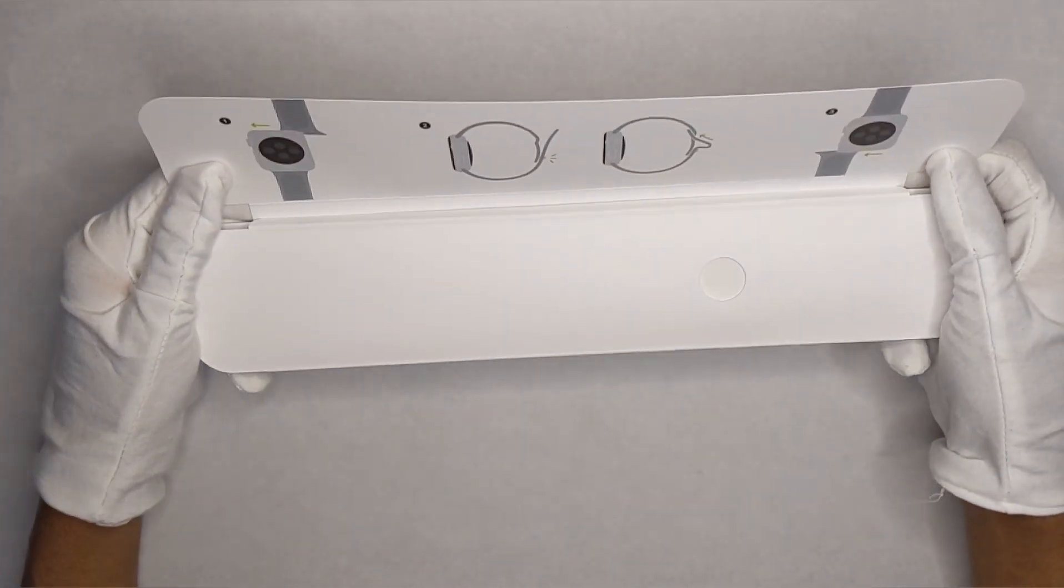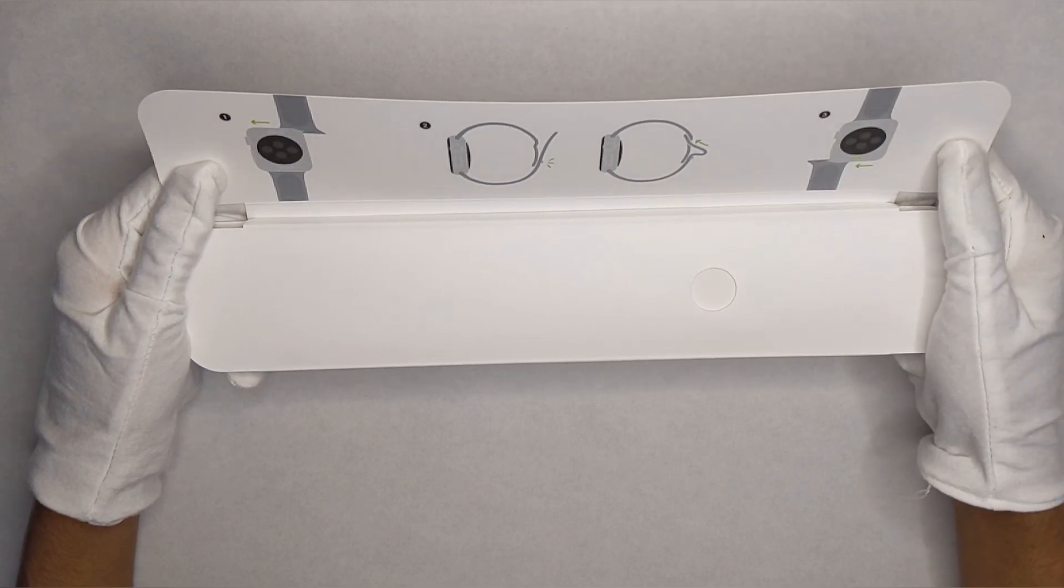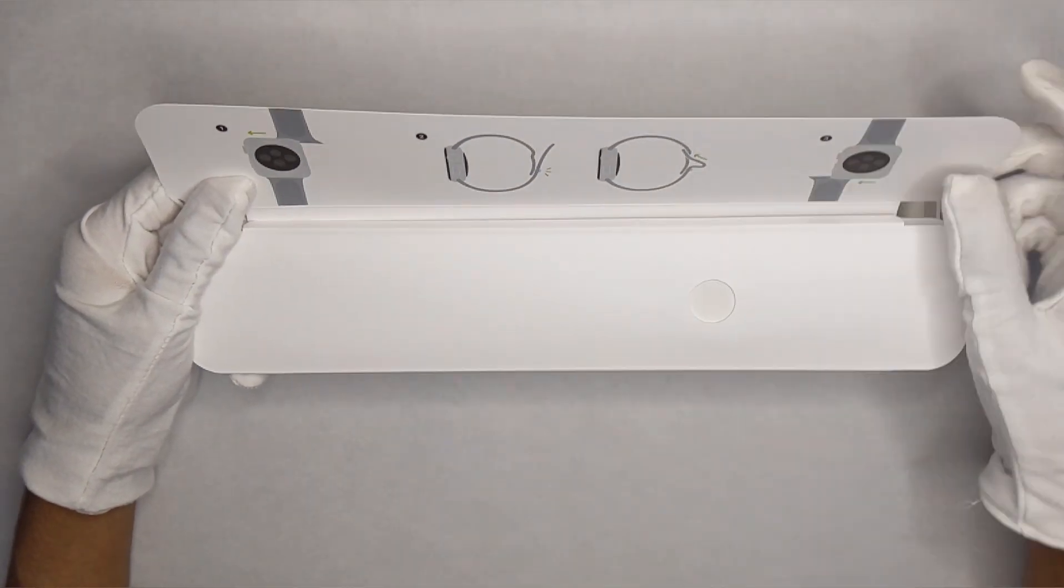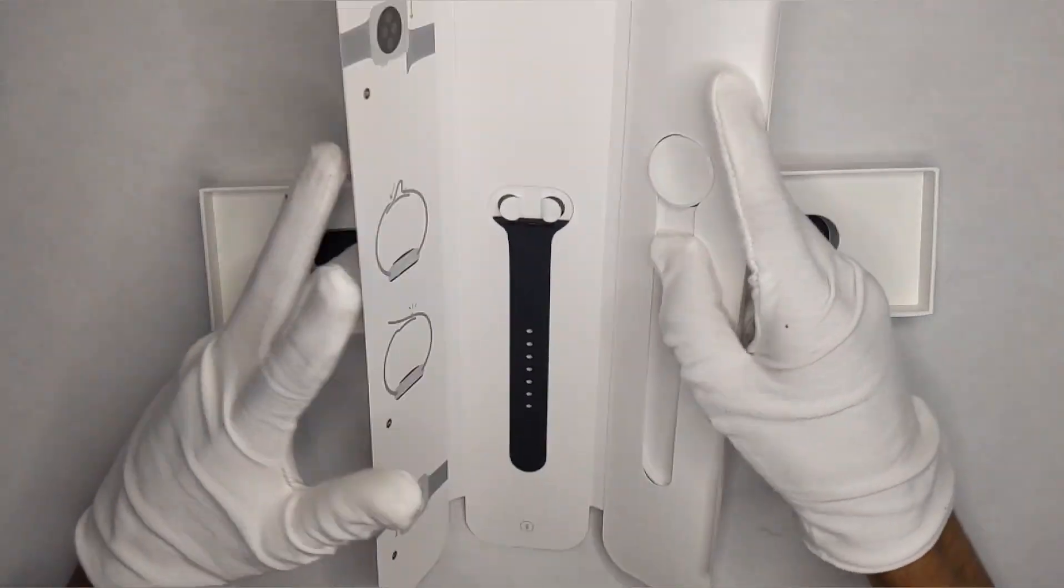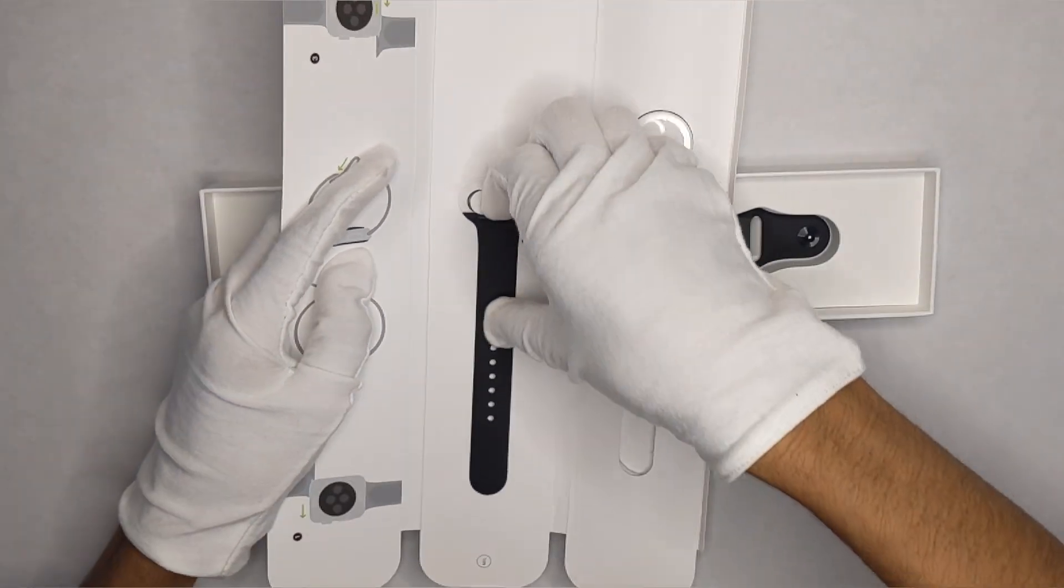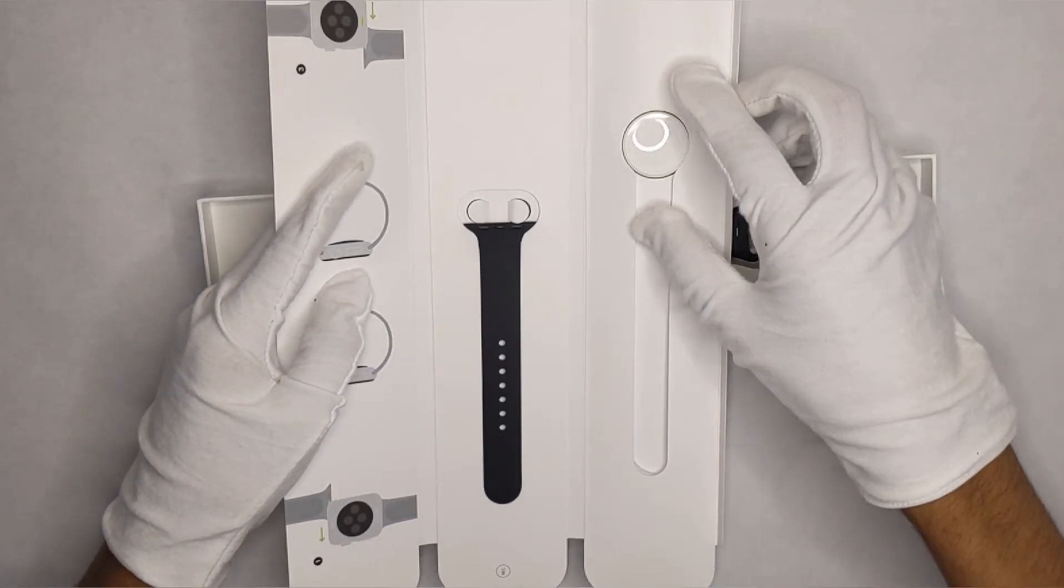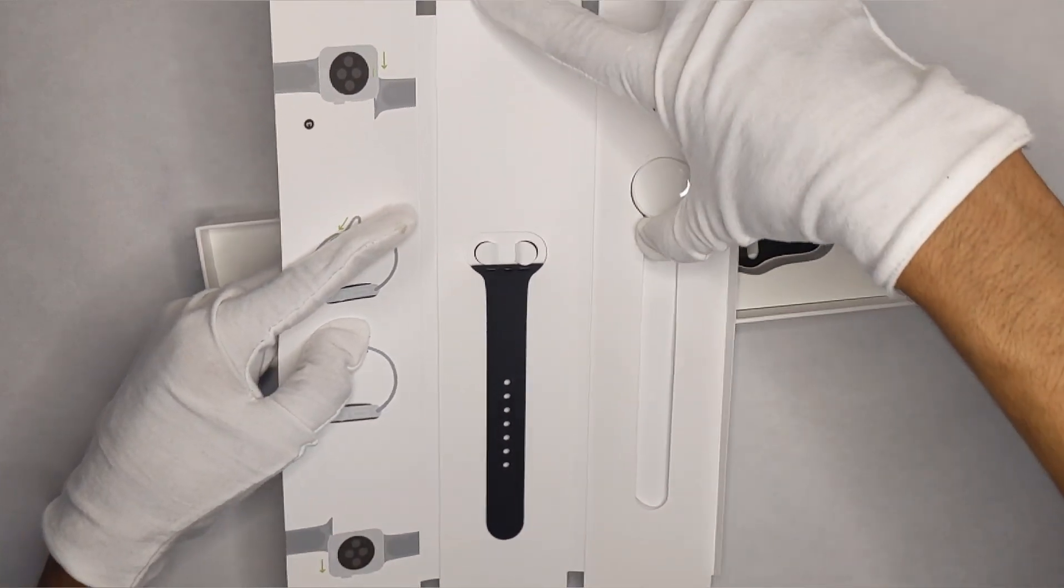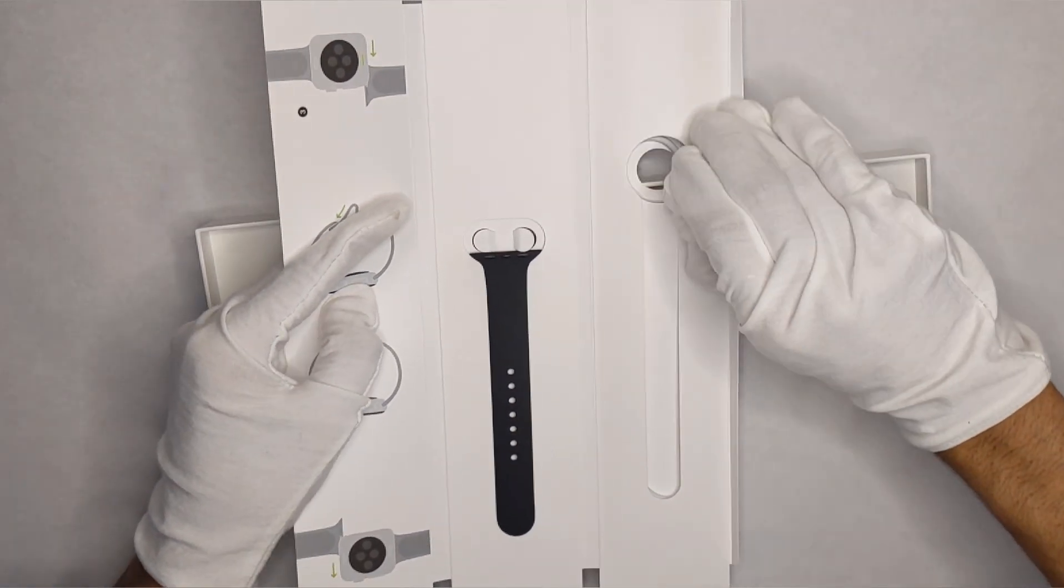And then in here we have the sport band as well as the charger. It just tells you how to install the new sport band if it doesn't fit. As you can see, it's right here. This is harder with gloves so I'm not going to take it out. They also have the charger here which I'm going to go ahead and take out.